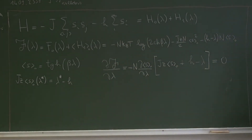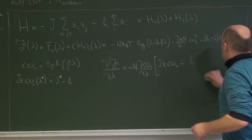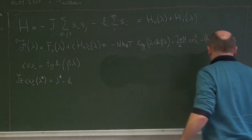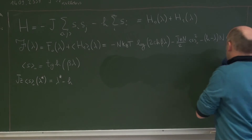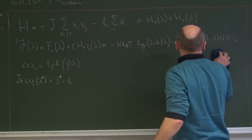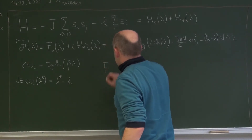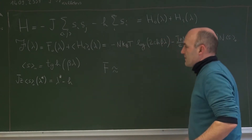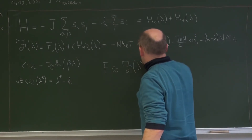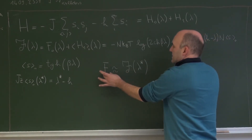Now we have done this calculation. We can remove this term. So we have an approximation of this Bogoliubov free energy. What the Bogoliubov inequality tells us is that the approximation of our free energy is obtained by the minimum of this, and this minimum is given by F computed in λ*. And now this is our starting point — we have an approximation of the free energy of our system.